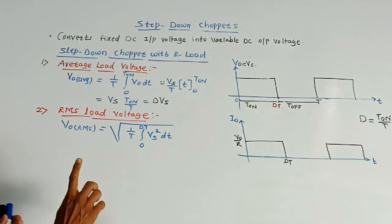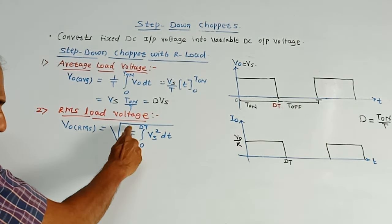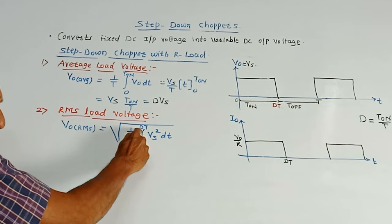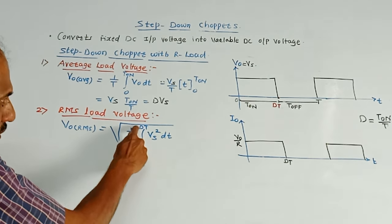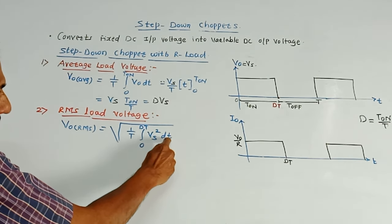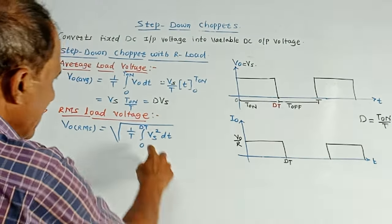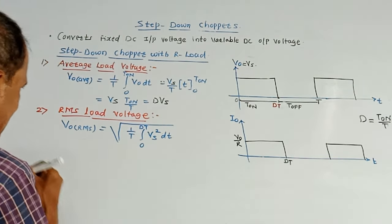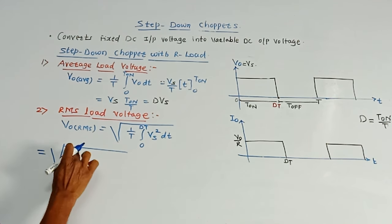Next is RMS load voltage or RMS output voltage. This is V0 RMS. Formula is under root of 1 by T integration 0 to DT. We may well write integration 0 to T on, one and the same thing. So integration 0 to DT, Vs square DT. Actual formula is here, V0 square. But V0 is Vs. So it is Vs square DT. Let us simplify it. We can well write this equation as under root of 1 by T. This Vs square can be taken outside this integration. So I will write it like this, Vs square upon T.